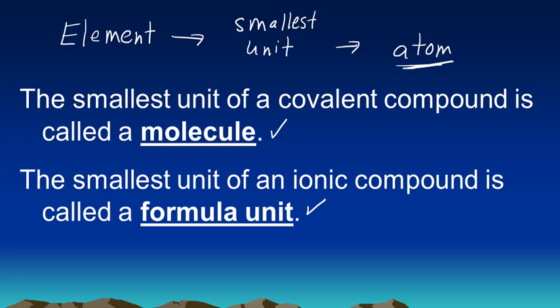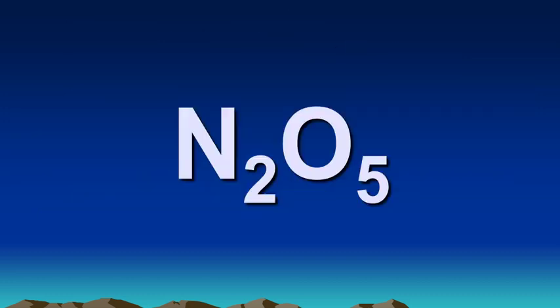Now today we're going to be focusing on covalent compounds. Let's take a look at this covalent compound. Nitrogen and oxygen are both nonmetals, so we can name this as a covalent or molecular compound.